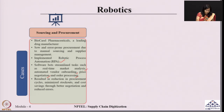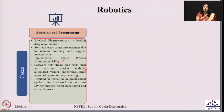This resulted in a reduction of procurement cycles and minimized stock costs, ultimately contributing to cost savings because of better negotiation and reduced errors. We can see how robotic process automation handles procurement challenges with real-time analysis and automation in the associated systems.